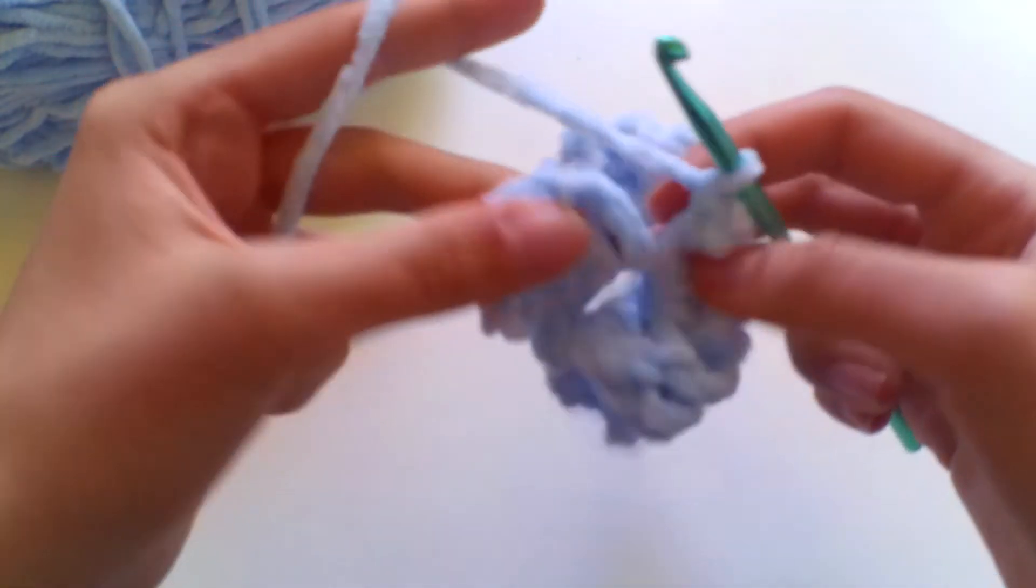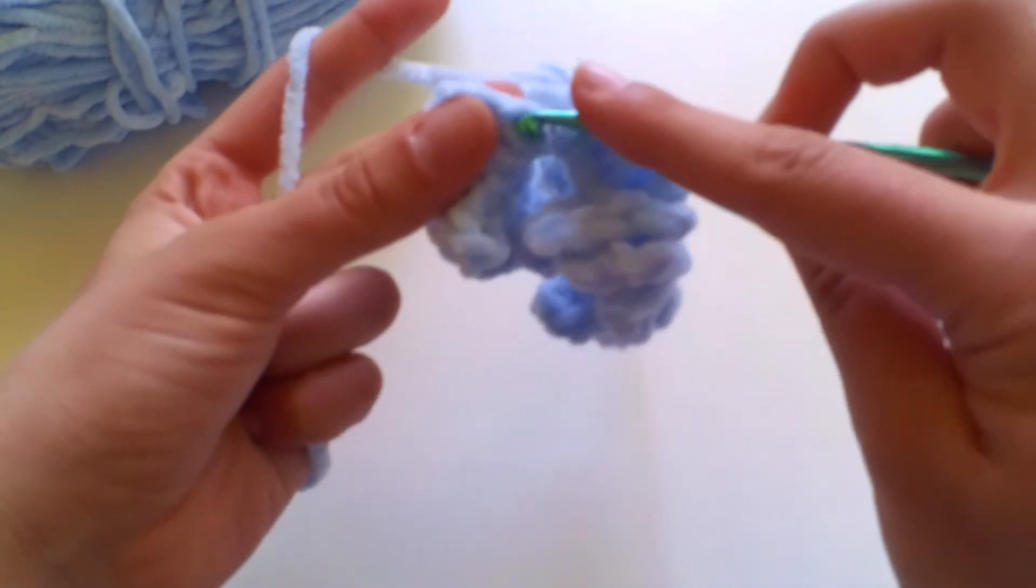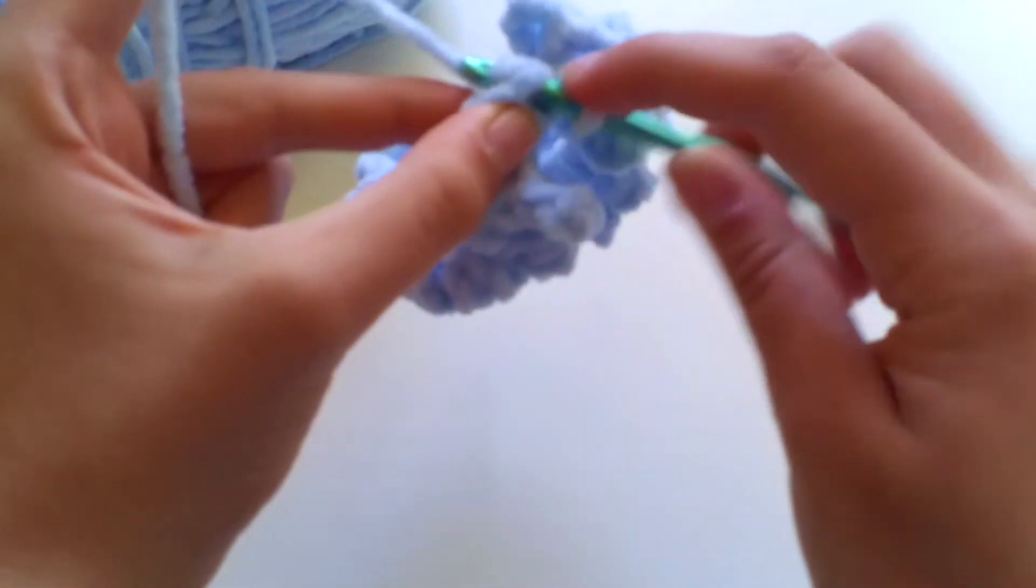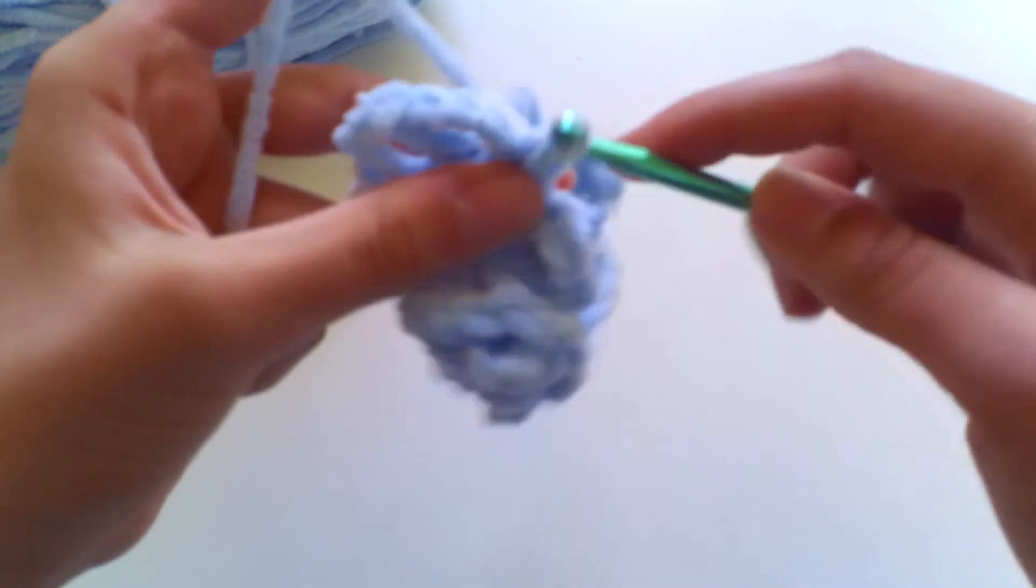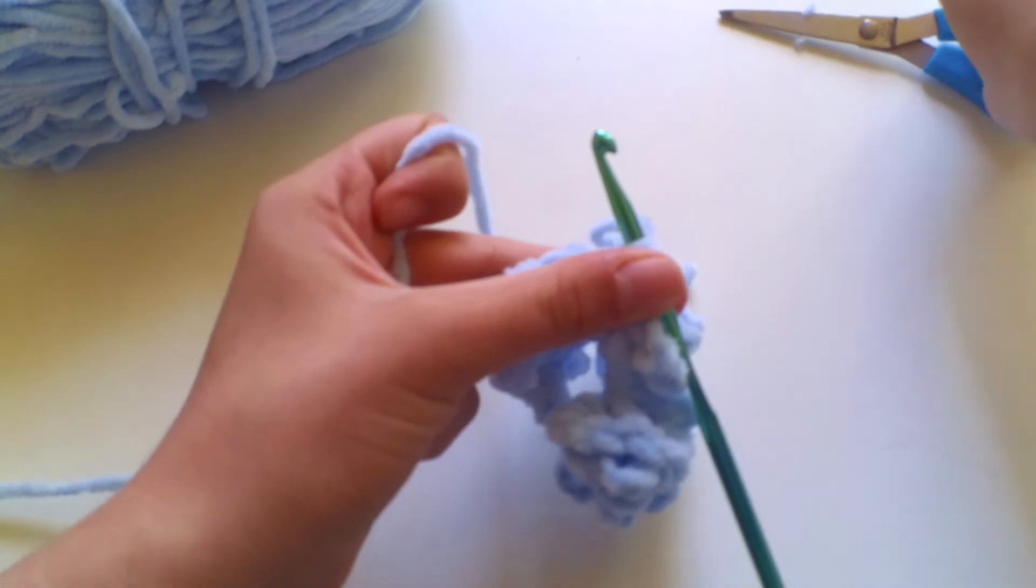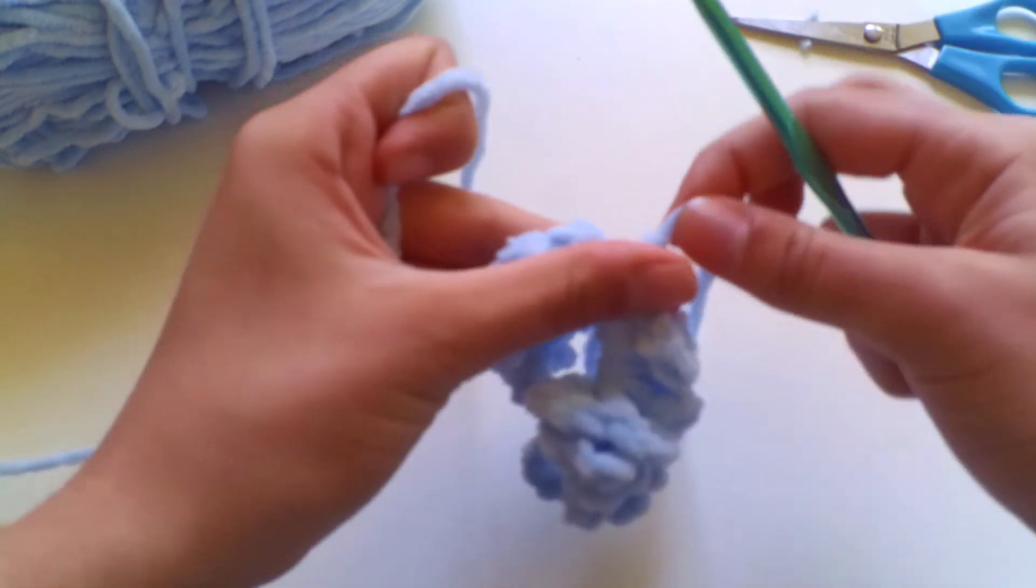So all you're going to do to finish off is I'm going to slip stitch. So I finished with a treble crochet and I'm now just going to slip stitch into that first double crochet that we created and I'm going to chain one and just cut off my yarn like so and pull through.